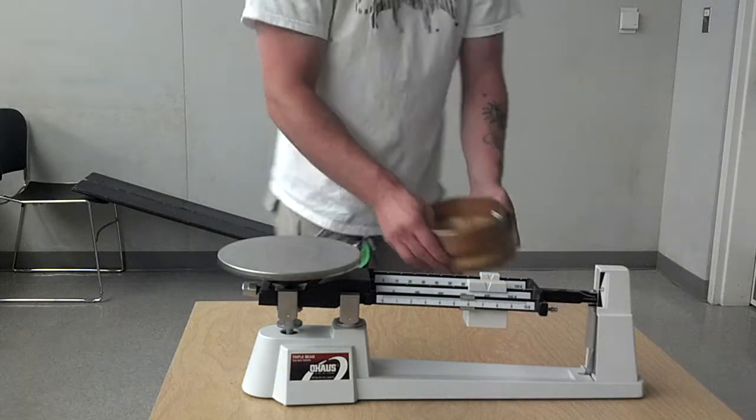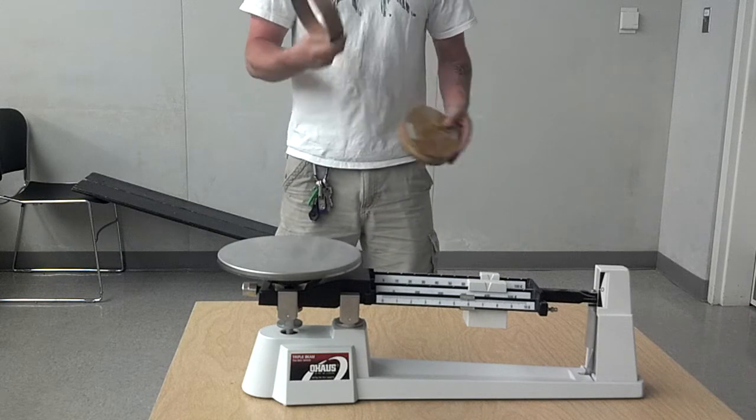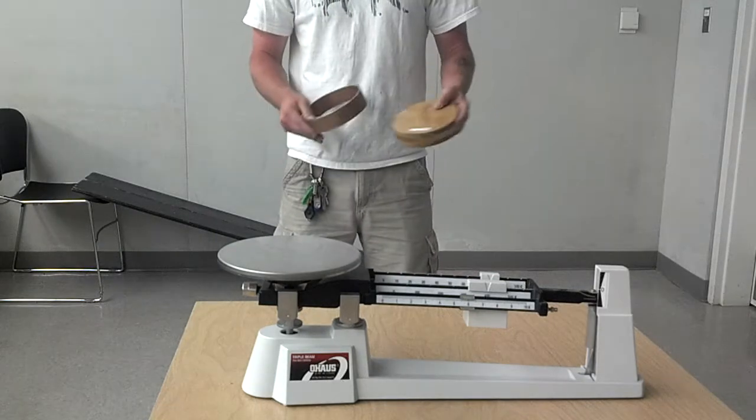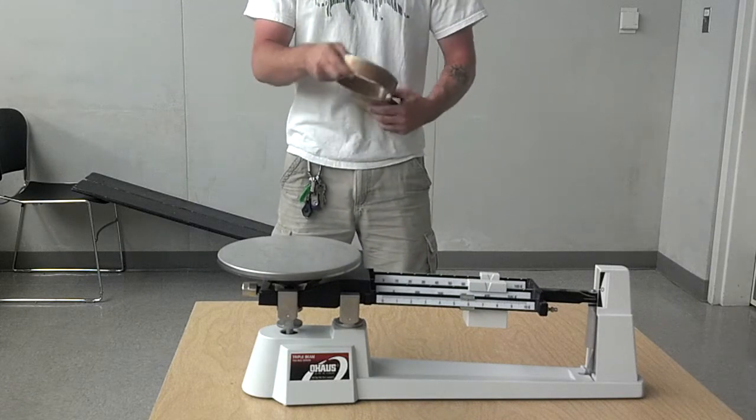Alright, for this demo we're going to demonstrate rotational inertia. We have a metal hoop and a wooden wheel. They both have the same diameter and they both have the same width.